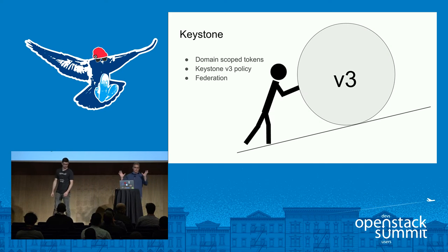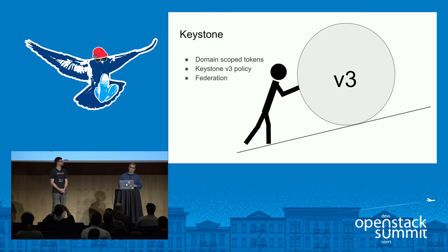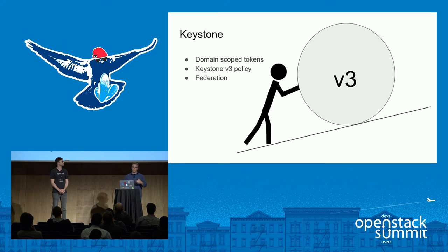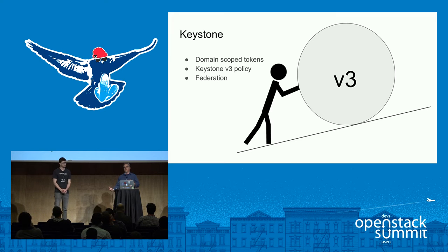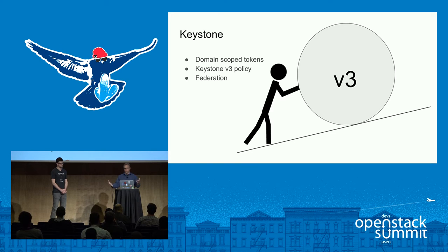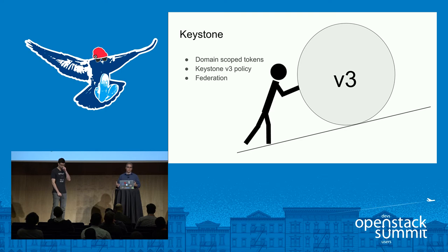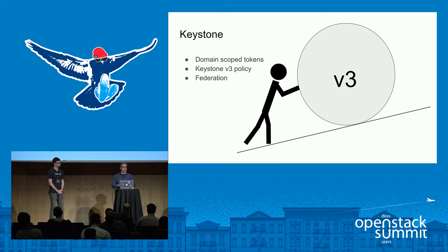We continue to push Keystone V3 support forward. In Mitaka, we added domain scope token support, which allowed us to have a domain admin manage users' roles and groups within their domain. It also allowed us to adopt the Keystone V3 sample policy file — though labeled a sample, people are using it as the V3 policy file.